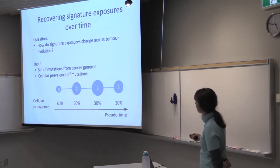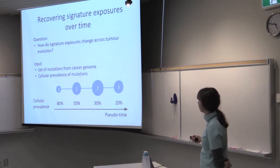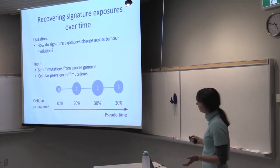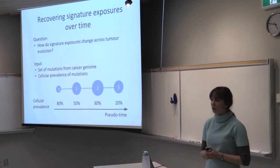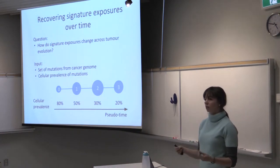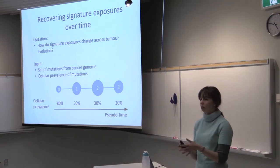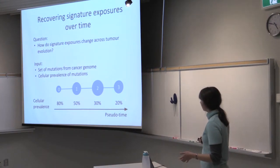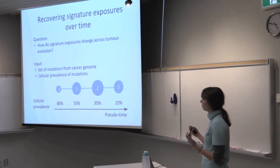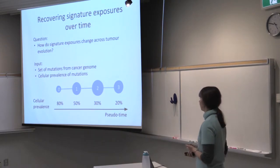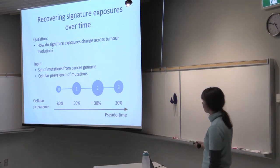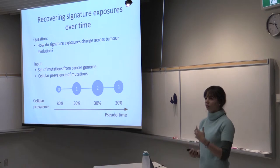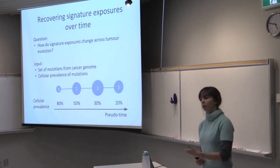For this, we are using the simple observation that if we take the cellular prevalence of the mutation, then if it has high cellular prevalence, this mutation probably occurred early in the tumor, because the cell acquires the mutation and then propagates it to all the daughter cells. And if the mutation has low cellular prevalence, then it probably occurred later in tumor development. Therefore, if we sort the mutations by cellular prevalence, we get the estimate of the relative occurrence of mutations in the tumor.